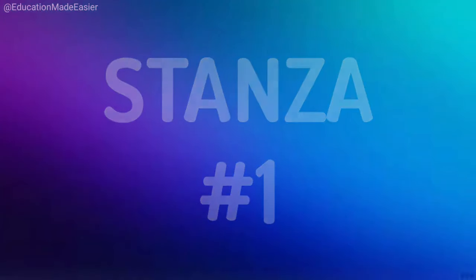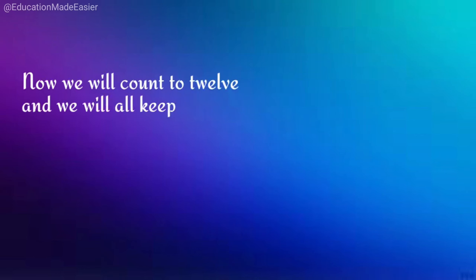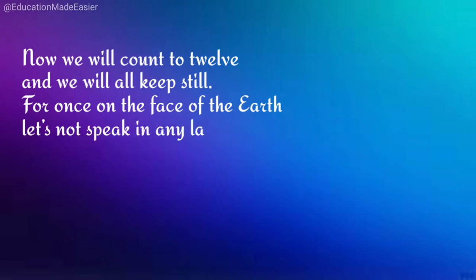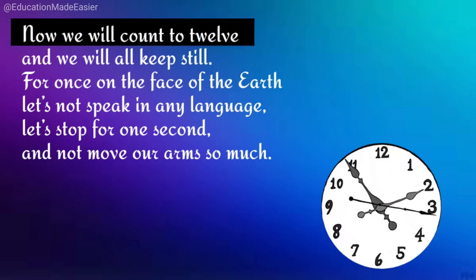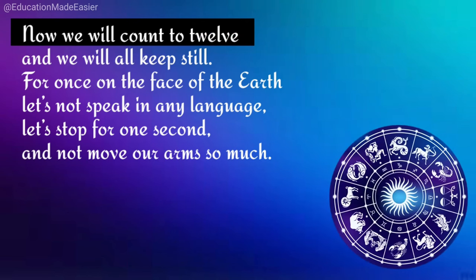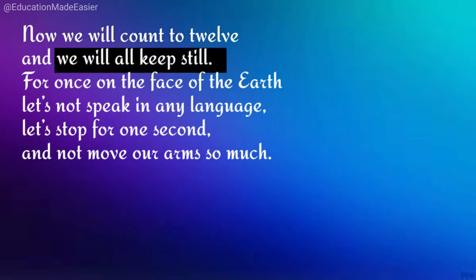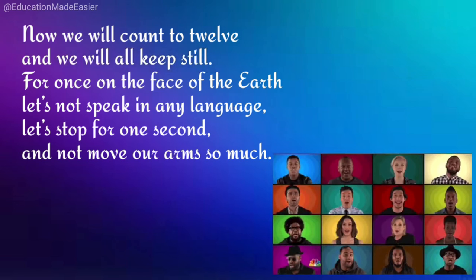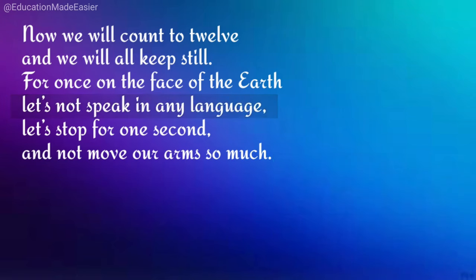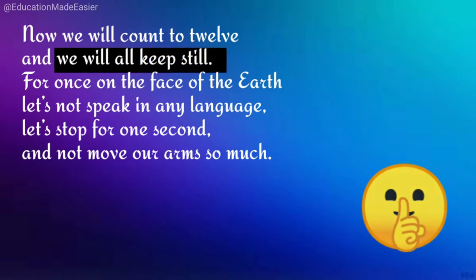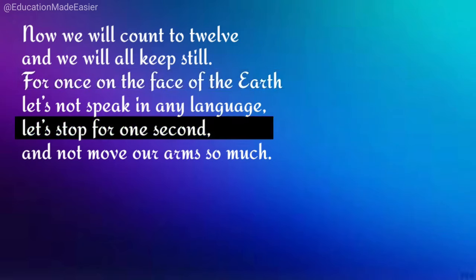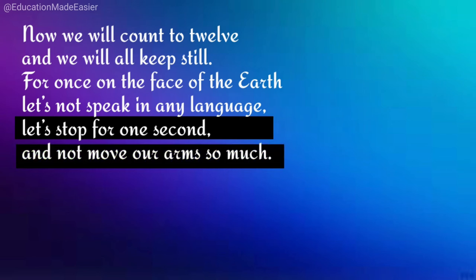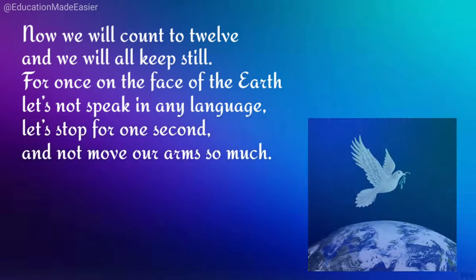The first stanza: 'Now we will count to 12 and we will all keep still. For once, on the face of the earth, let's not speak in any language. Let's stop for one second and not move our arms so much.' The poet asks everyone to count up to 12 — representing the hours of the day, months of a year, or zodiac signs. He wants all of us to be calm and still, not speak our own languages, but keep quiet and speak the language of silence, bringing unity and demanding peace.